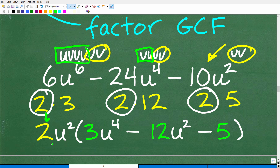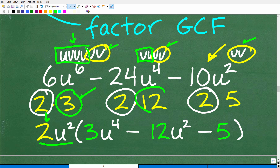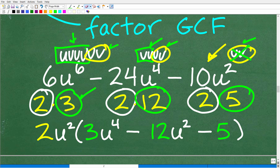So the GCF is 2u squared. When we factor that out, from 6u to the 6th we're left with 3u to the 4th; from 24u to the 4th we're left with 12u squared; and from 10u squared we're left with just 5 — no u's remaining. So factored, the numerator becomes 2u squared times (3u to the 4th minus 12u squared minus 5).